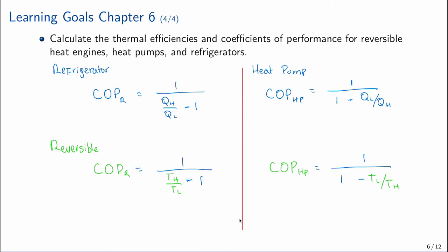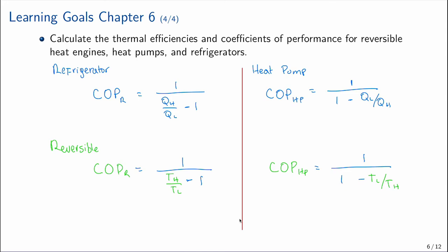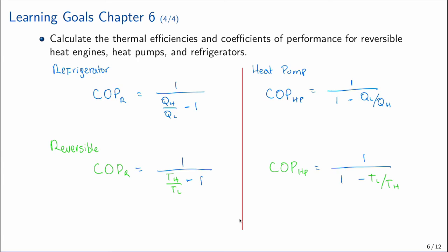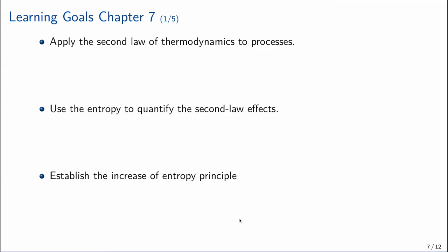This is a summary of thermal efficiency and coefficients of performance for the refrigerator and heat pump. For a standard (irreversible) refrigerator, we use the heat-based formulas. For a reversible refrigerator or heat pump, we can replace heat values with temperatures in the formulas. The reversible forms appear in the lower part of the summary table.